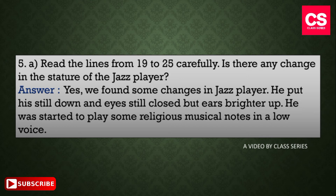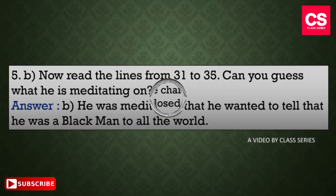Our fifth question, part A: read the lines from 19 to 25 carefully — is there any change in the stature of the jazz player? The answer: yes, we found some changes in the jazz player. His head was still down and eyes still closed, but his ears brightened up. He started to play some religious musical notes in a low voice.